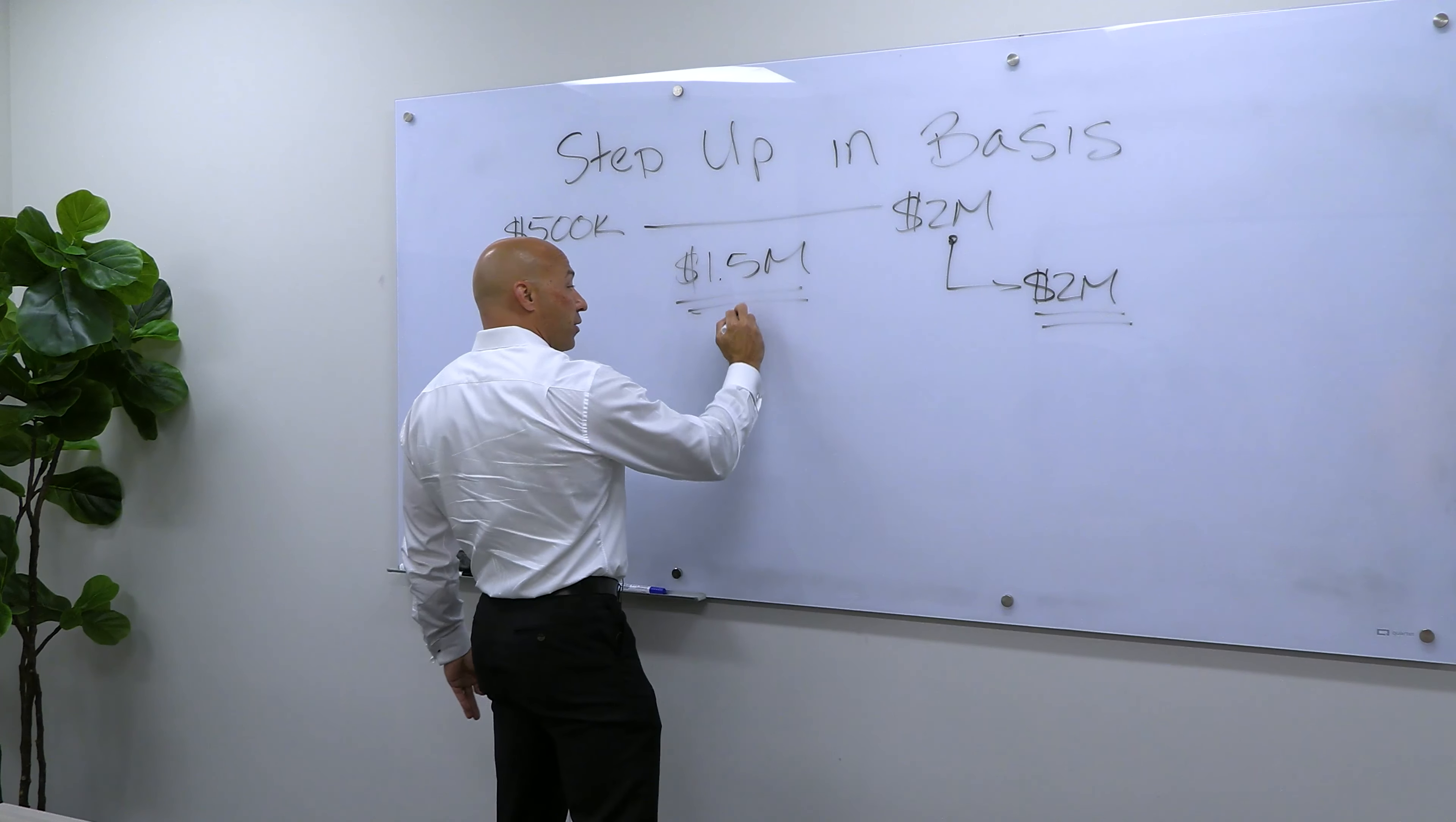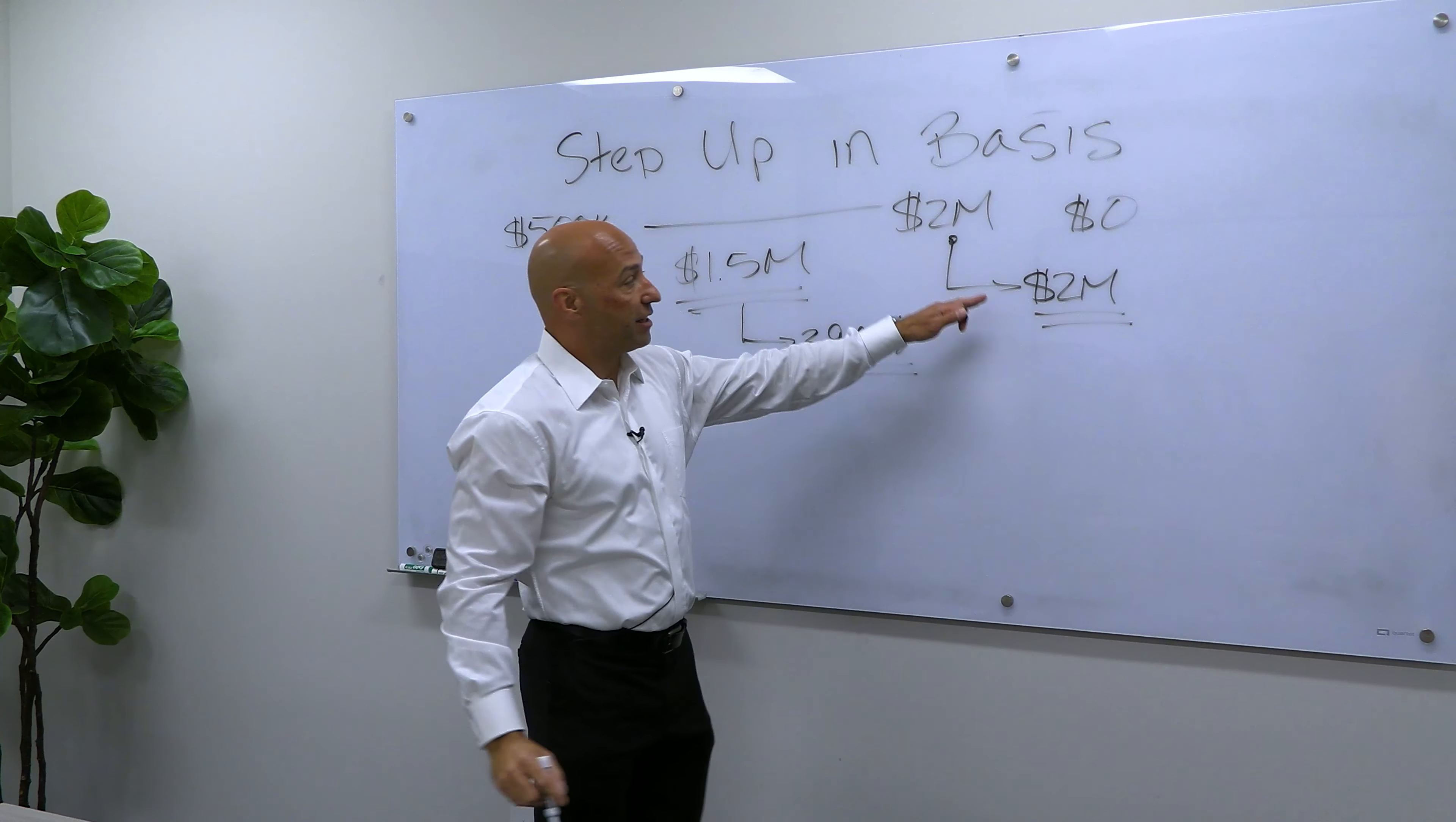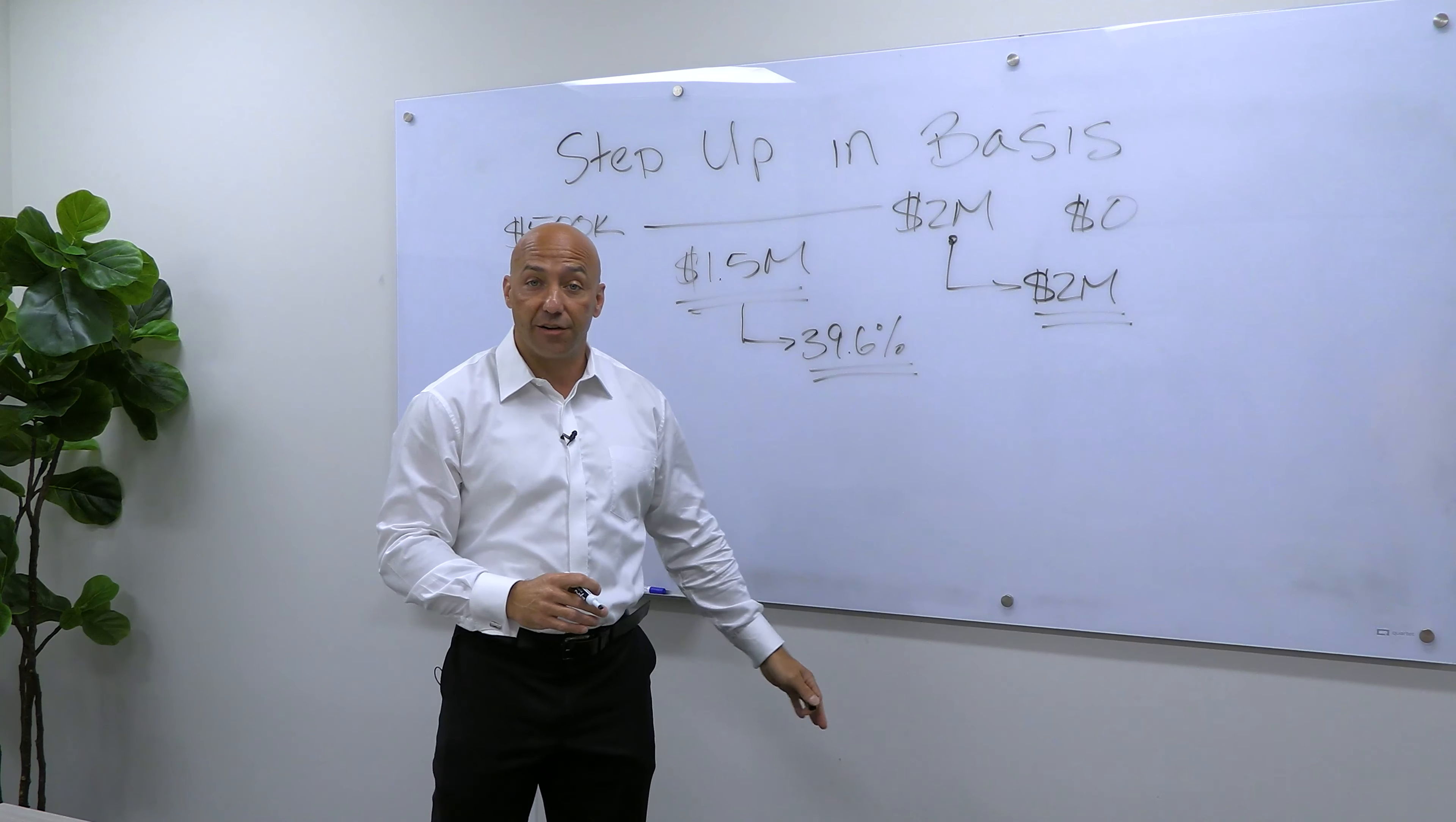And he even proposed taking the top capital gains tax rate to 39.6%. So you could see in this scenario, my children pay $0 in taxes because of the step up in the basis, the way it works currently. And here they would owe 39.6% potentially on $1.5 million of gains. Obviously a lot more taxes would be due under that scenario.